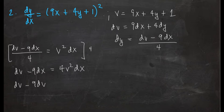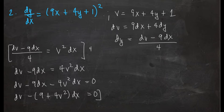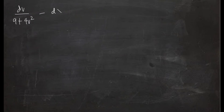Setting everything to zero and factoring: dv - (9 + 4v²)dx = 0. This is again a differential equation solvable by separation of variables. The resulting separated form is dv/(9 + 4v²) - dx = 0.